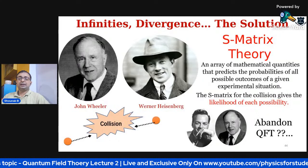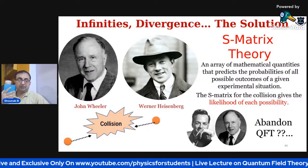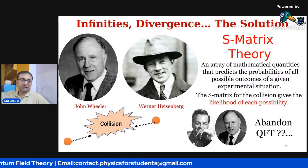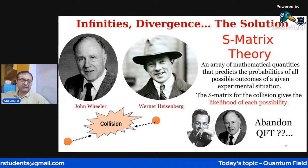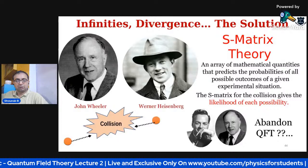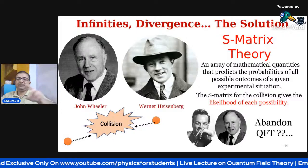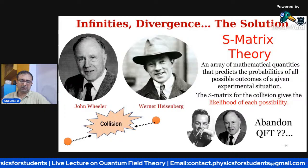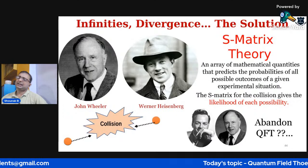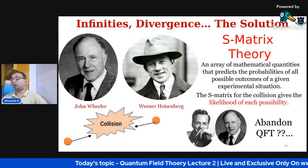Around this time there was also the S-matrix theory, developed by Heisenberg. The S-matrix is an array of mathematical quantities that predicts the probabilities of all possible outcomes of a given experimental situation — for a collision it gives the likelihood of different outcomes in a matrix form, with each point describing a type of probability. However, S-matrix theory itself had problems, and people were unable to properly formulate it.